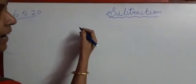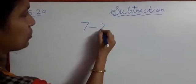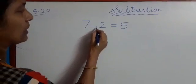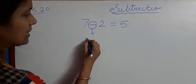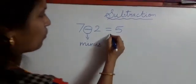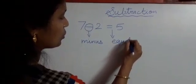How will you write the statement? 7 minus 2 is equal to 5. What do you call this sign? Minus. What do you call this sign? Equal to.